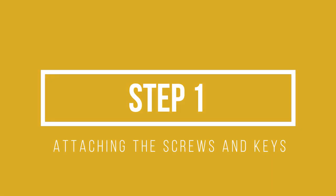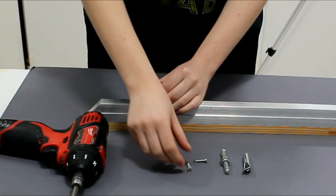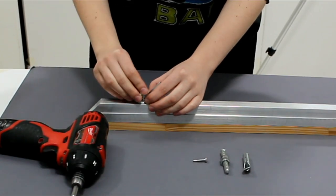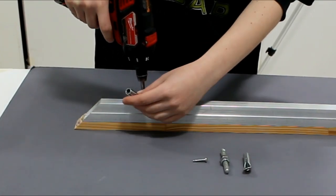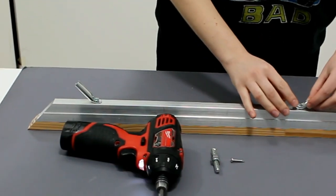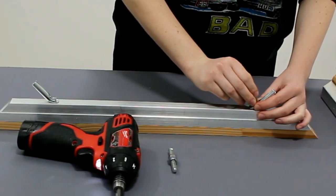The first step will be to attach the screws and keys. To begin, you will place the flat side of the key onto the stretcher bar, lining up the holes. Then you will drill a screw to secure the key to the stretcher bar. Make sure not to screw the key on too tightly as we will need to adjust it later.